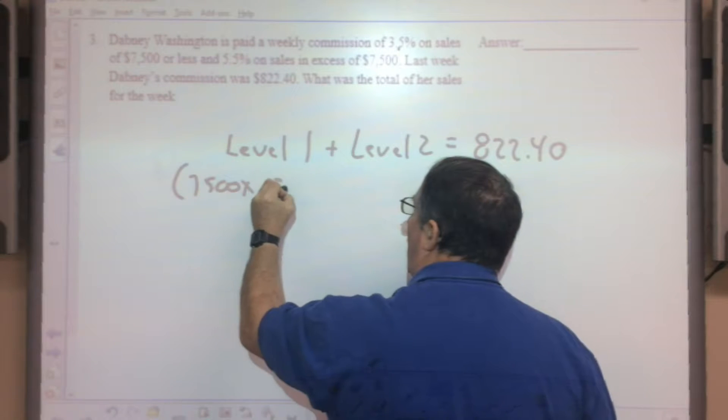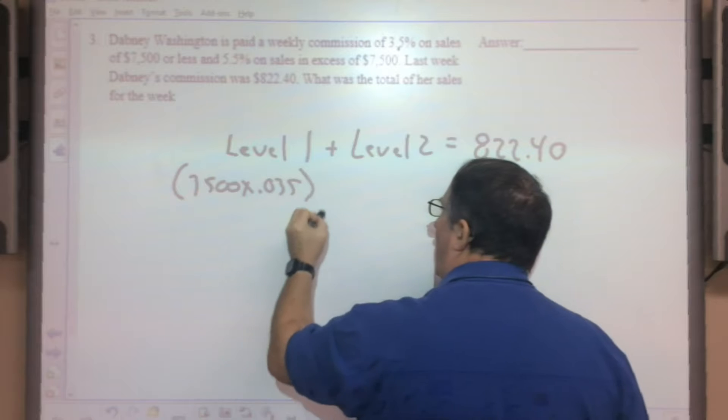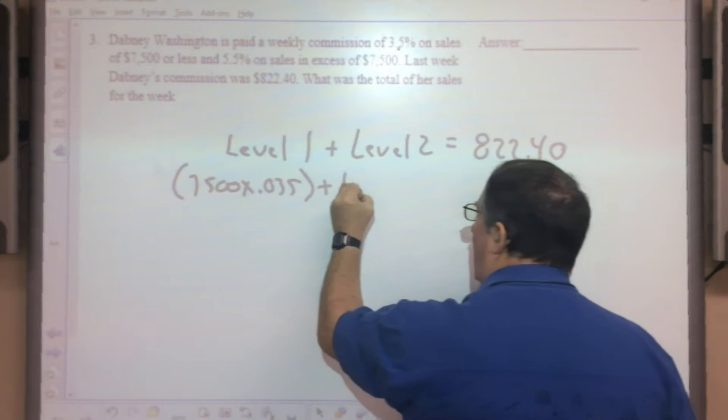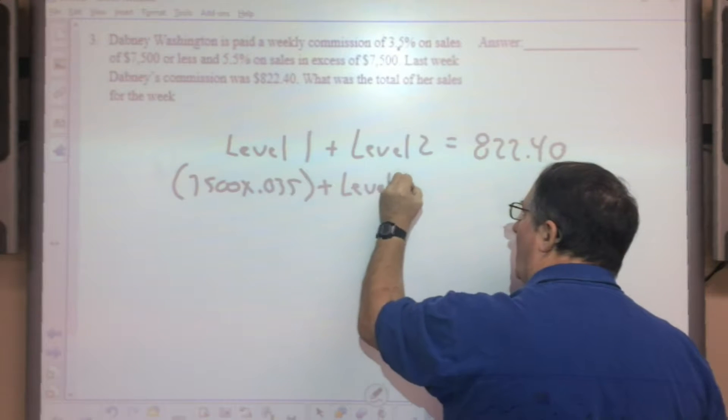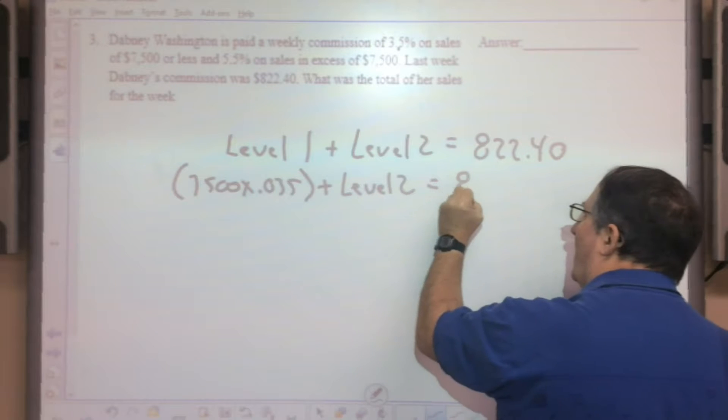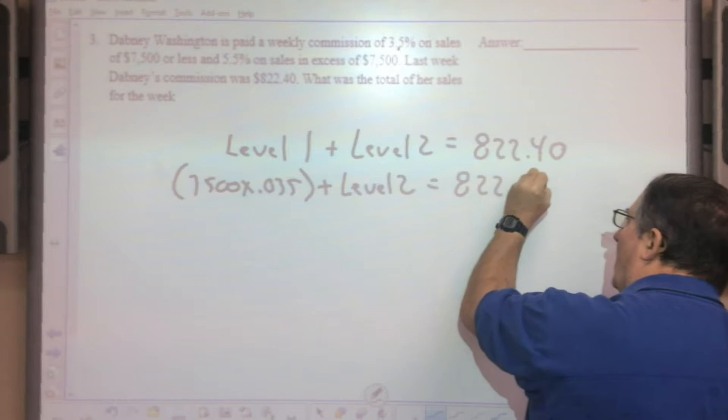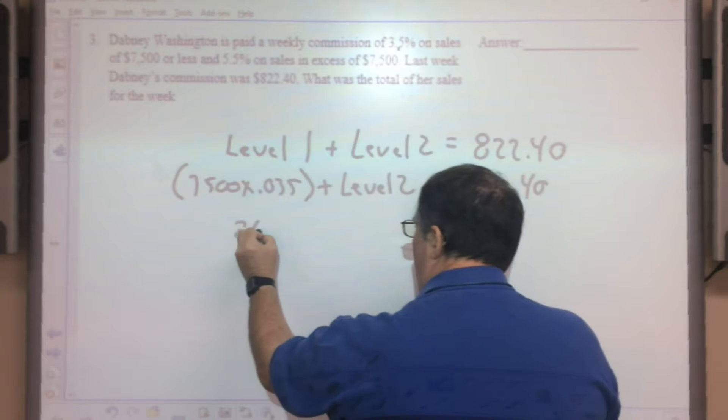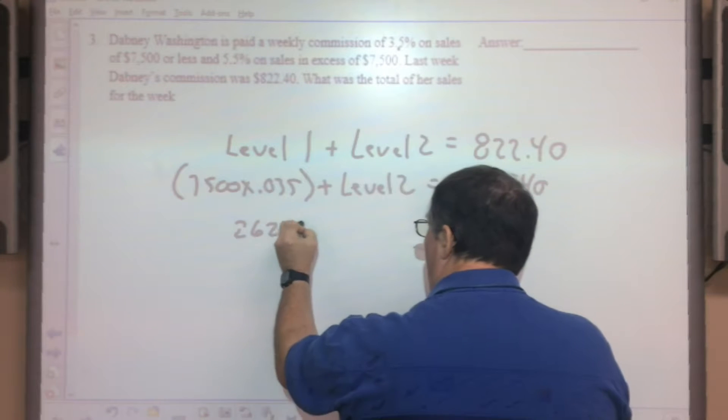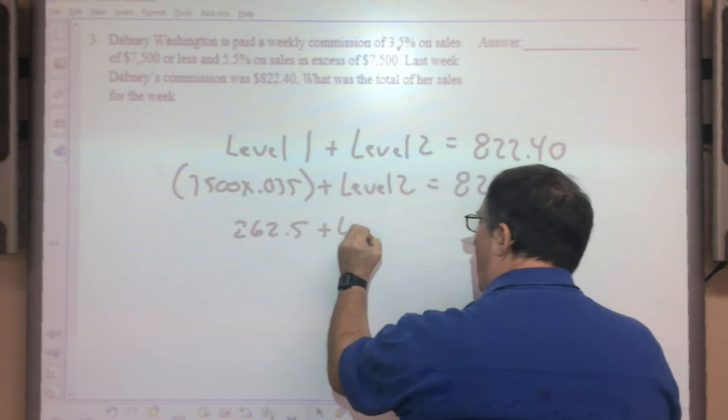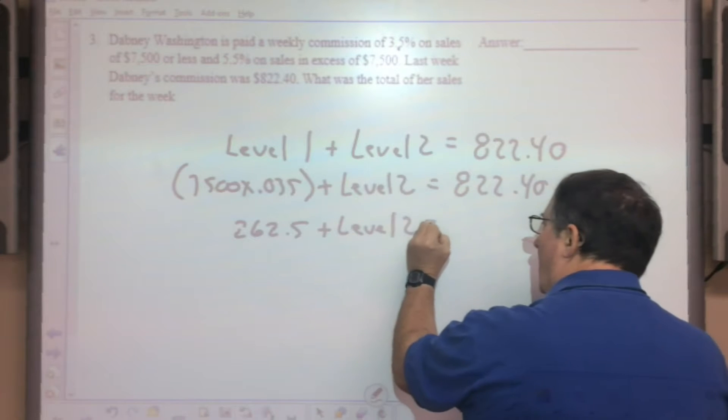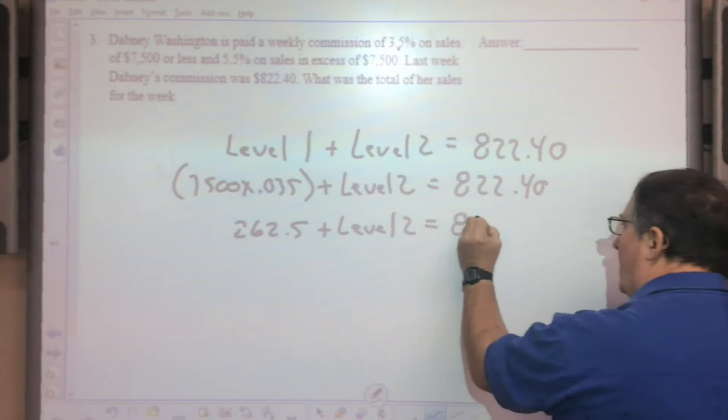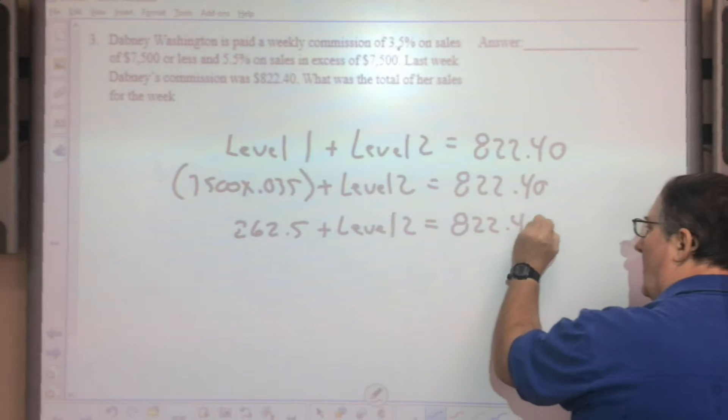Level 1 is $7,500 times 3.5%, or 0.035, plus any sales in Level 2, which we don't know at this point. So you calculate what your commission on the first level was, and you get $262.50.